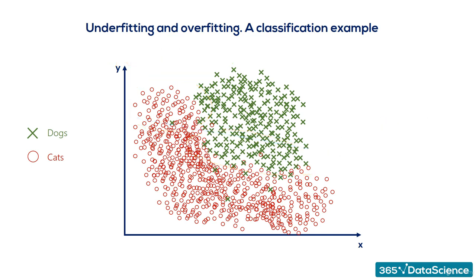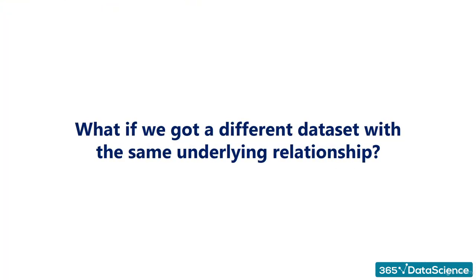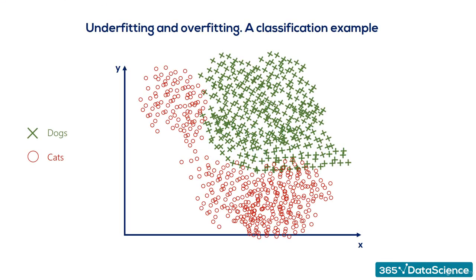Now, an overfitted model would classify the observations perfectly, right? It has correctly identified all the cat and dog photos in the dataset. But once we give it a different dataset, following the same quadratic function logic, it will perform poorly.